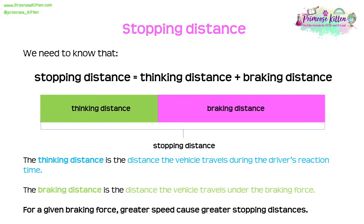Stopping distance is the sum of thinking distance and braking distance — the total distance it takes to stop from the moment you see an object to the moment you stop. Thinking distance is the distance travelled during the driver's reaction time, from when you see the hazard to when you put your foot on the brake. Braking distance is the distance the vehicle travels under the braking force. For a given braking force, greater speed causes greater stopping distances.